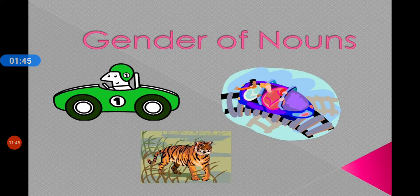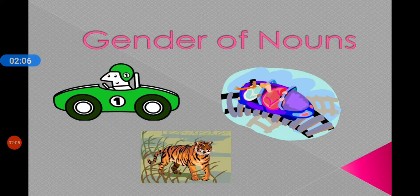I hope you remember that we learnt the categorization of nouns according to gender. What are the four categories? The four categories are masculine gender, feminine gender, common gender, and the fourth — neuter gender nouns. Let's have a quick look at all of them.